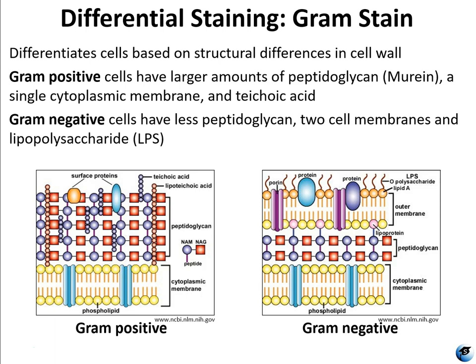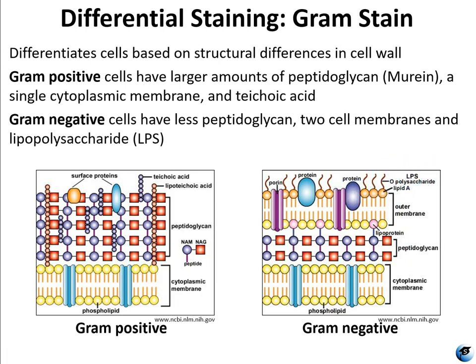The gram stain differentiates cells based on their cell wall. A gram-positive cell has a big thick layer of peptidoglycan on the outside of its cell wall and only one cytoplasmic membrane. A gram-negative cell has much less peptidoglycan, and its peptidoglycan is sandwiched between two membranes. Gram-negative cells also have lipopolysaccharides, which are endotoxins — pretty important structural differences.